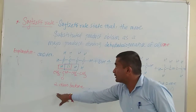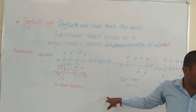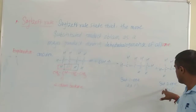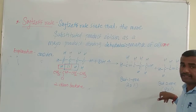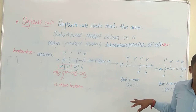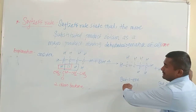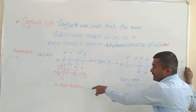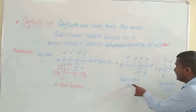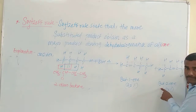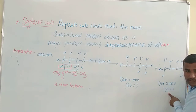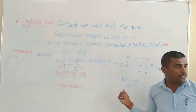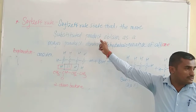According to the Zaitsev rule, this is the major product. For this example — the dehydrohalogenation of 2-chlorobutane gives but-1-ene and but-2-ene — you have to state that but-2-ene is the major product. Explain why: according to the Zaitsev rule, the more substituted alkene is the major product.